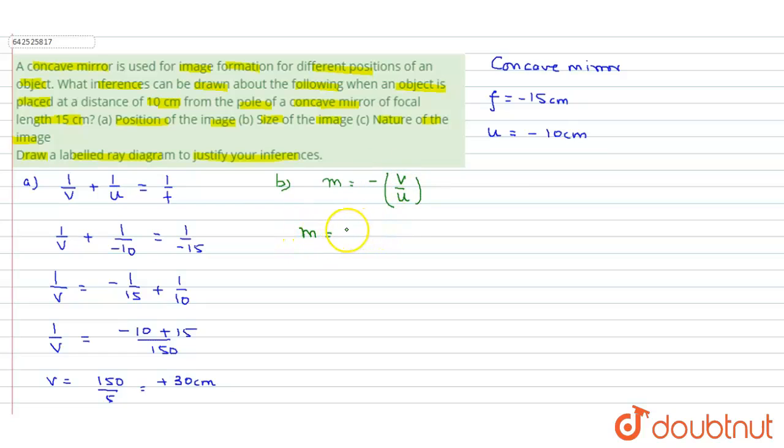On putting the value of v, it is plus 30 and u is minus 10.